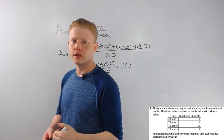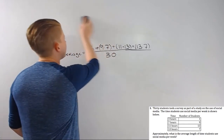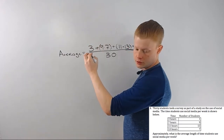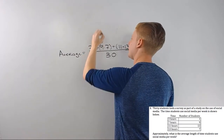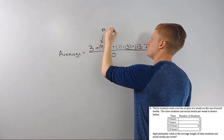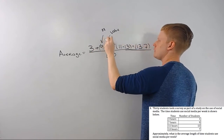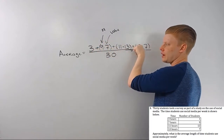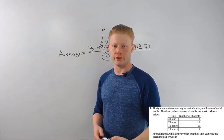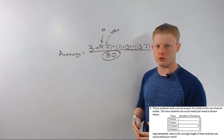That makes our average 10 hours a week — a nice real number. So what we did was take the number of times something happens, times the value. We added all those number-times-values together, divided by the total number, and that gave us the average. It's an easy way to do a weighted average, and it works really well when you have this sort of frequency table.